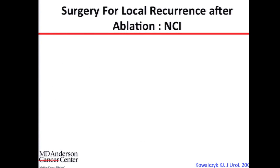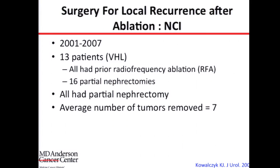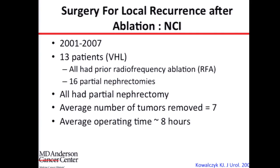The second series is from the National Cancer Institute. Over about six or seven years, 13 patients with VHL syndrome were included. All patients had initially had radiofrequency ablation, and all had partial nephrectomies for their recurrence. The average number of tumors removed was about seven, which is not unusual because VHL patients tend to have multifocal tumors in the kidneys. The average operating time was about eight hours — reflecting the difficulty of these cases — and blood loss was about 1.5 liters.